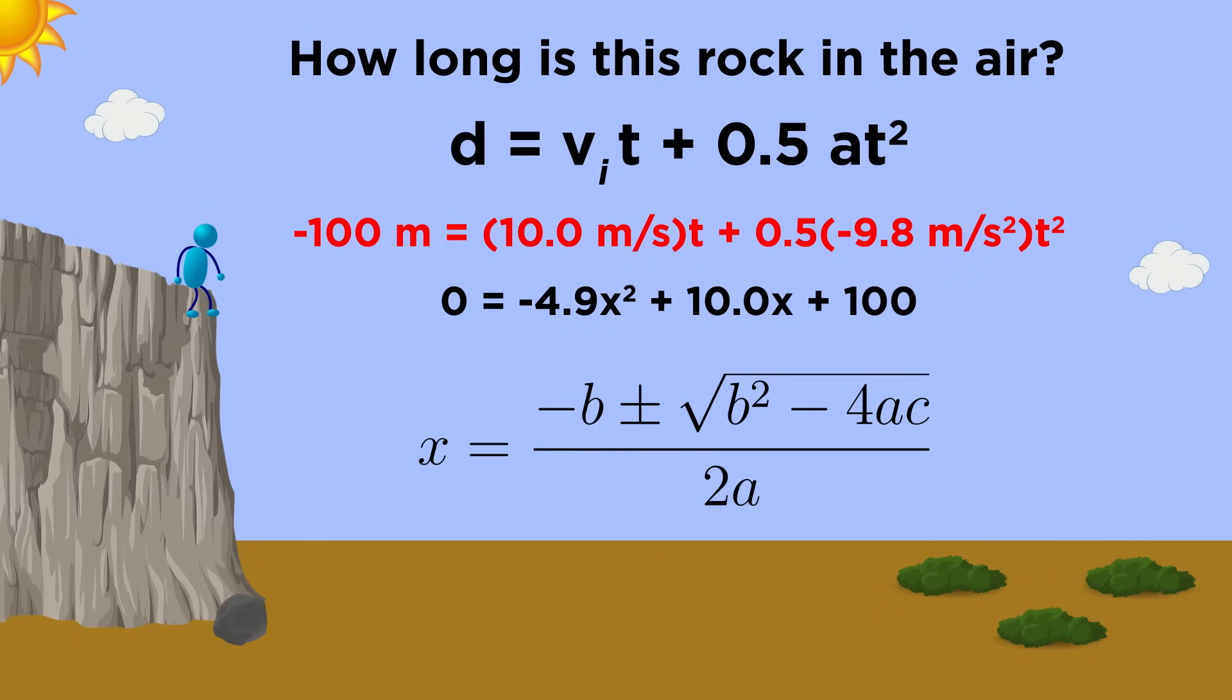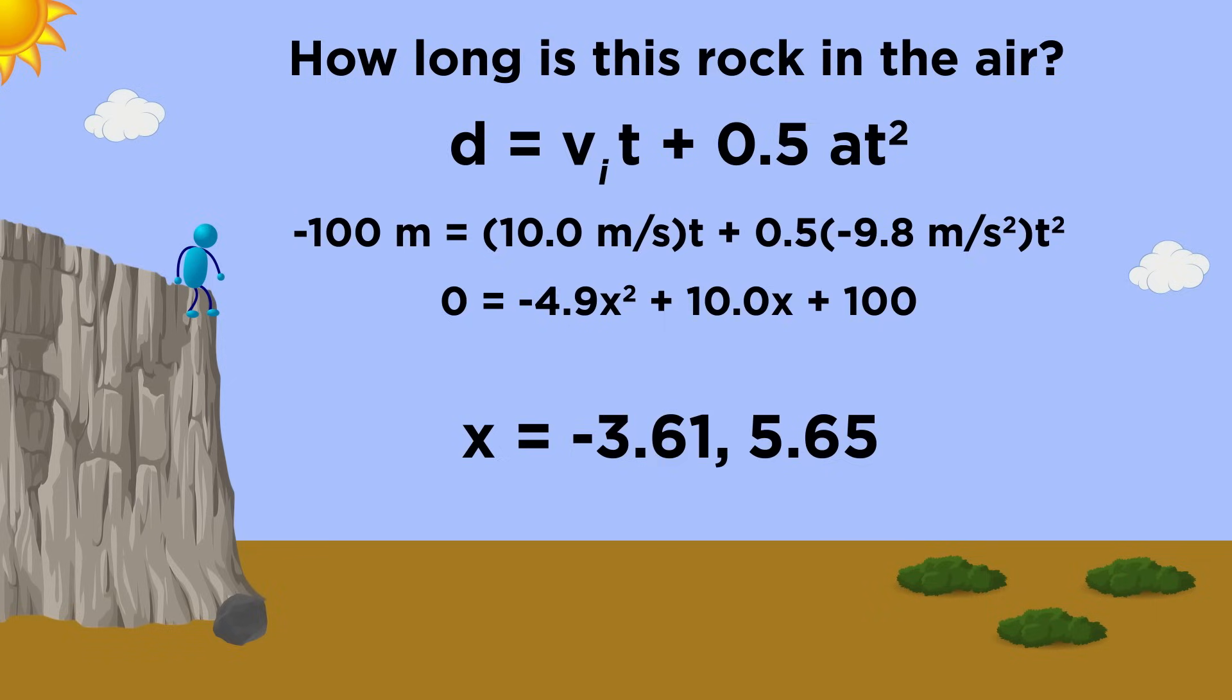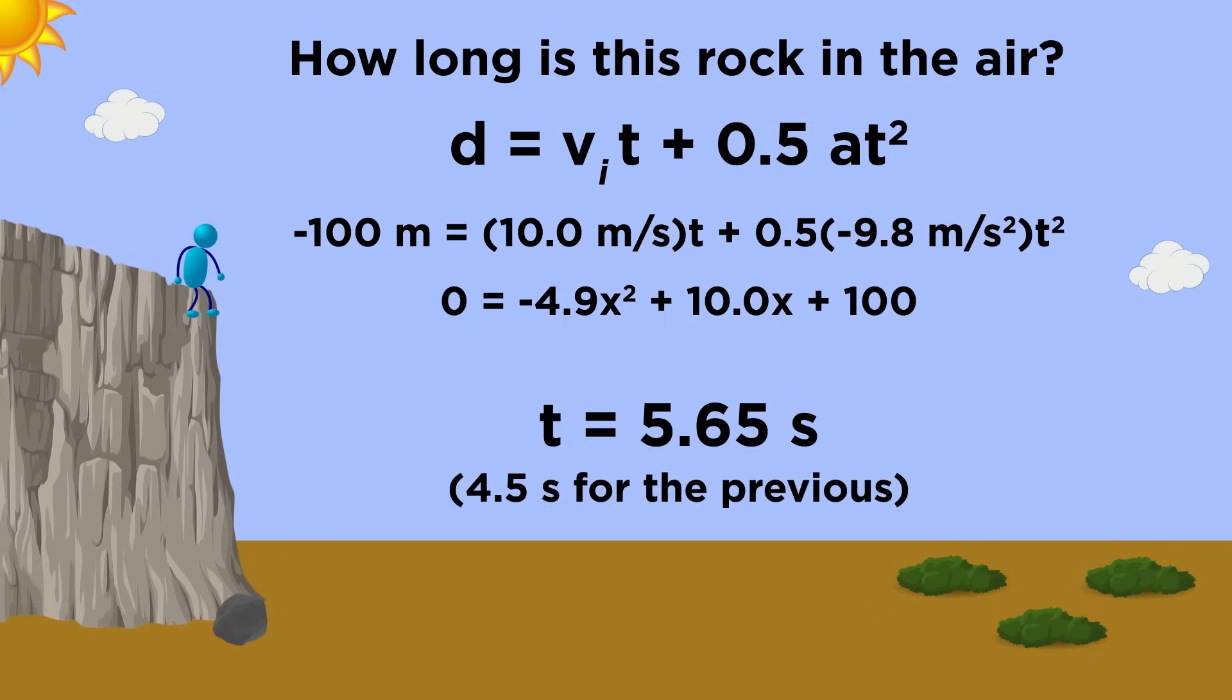So we have to take our equation and rearrange it to look like the standard form, which involves us adding 100 to both sides. There's our a, b, and c. If we plug those in, we get the two values for x, but the positive answer is the one we are looking for, as it doesn't make sense to discuss negative quantities of time. So we can conclude that it takes 5.65 seconds for this rock to hit the ground, a little over a second longer than the one we simply dropped.